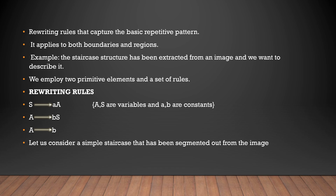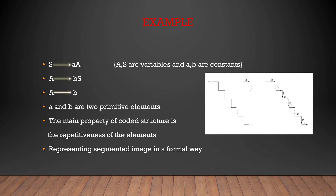According to these rules, we can code the given structure. Let us consider a simple example — a staircase that has been segmented out of the image. We represent the horizontal line as a and the vertical line as b. After coding, we will get a, b, a, b, a, b, a, b, a, b. So a and b are two primitive elements. The main property of the coded structure is the repeativeness of the elements.